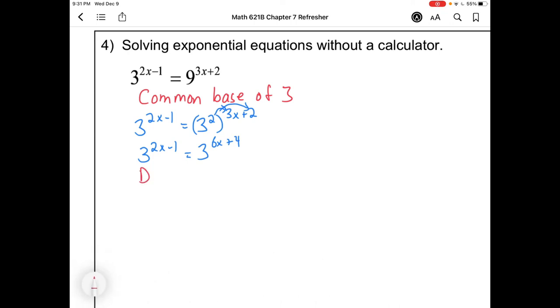Now that we've gotten it written nicely with a common base, we can drop the base. And when we do that, we'll get 2x minus 1 equals 6x plus 4. If you're feeling fancy, you could put a therefore in here because we're reasoning it out, but it really doesn't matter. Let's keep on going. We will move things over. So we'll have a negative 4x on this side and we'll have a positive 5 over here, or x equals negative 5 over 4.